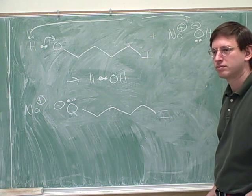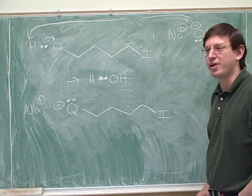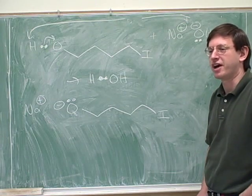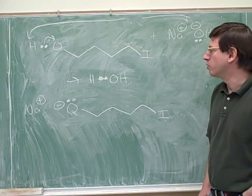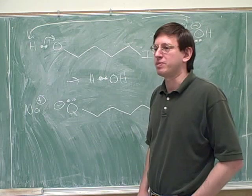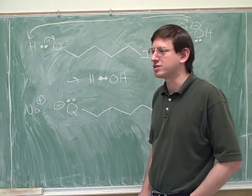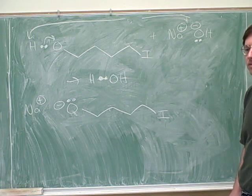Now what? What are we trying to make? This is a predict the products problem and we're supposed to predict the final product. So this might be the final product or there might be more things that could happen. So should we stop here or are there any other plausible reactions that could happen now?